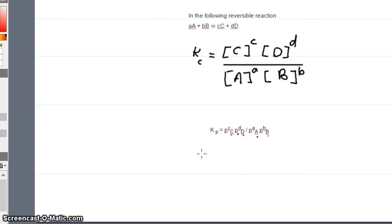So we write Kp is equal to partial pressure of C raised to C, then into partial pressure of D gas raised to D, divided by partial pressure of gas A raised to A into partial pressure of gas B raised to B. So this is going to be the equation for Kp.